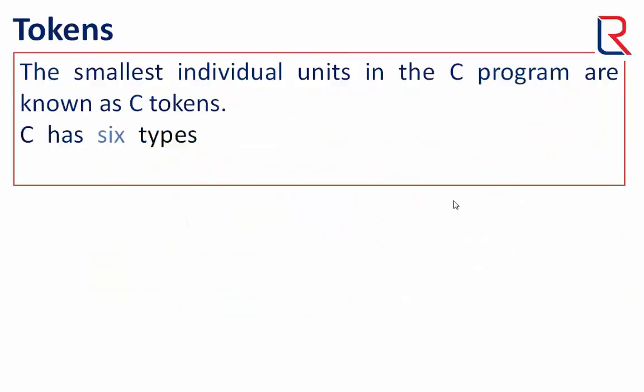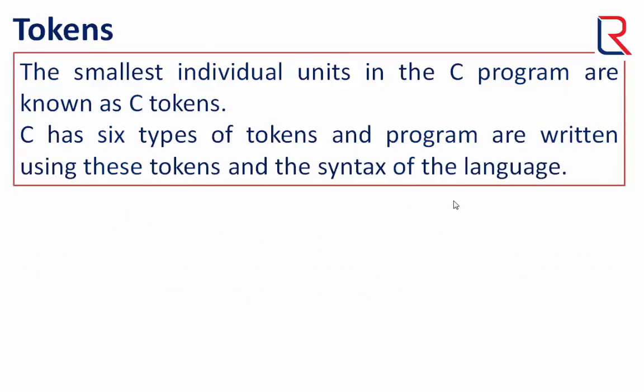Now let's see the tokens. The smallest individual units in the C program are known as tokens. C has six types of tokens, and programs are written using these tokens and the syntax of the language.